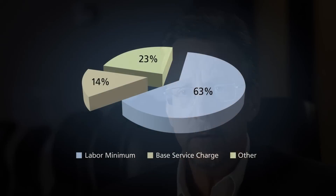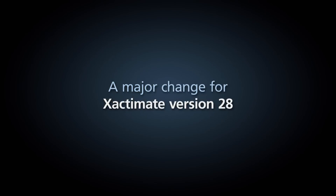To address this challenge and in an effort to provide the most effective tools, Xactware recently concluded a detailed study involving over 1,600 general contractors, trade contractors and service providers, as well as independent and staff adjusters and other insurance industry professionals. The results of the study indicated a strong preference industry-wide for moving to an estimating platform that uses a labor minimums concept instead of service charges to address small jobs. To support the industry's preference, Xactware is making a major change to the Xactimate software and its pricing database starting with the release of Xactimate version 28.